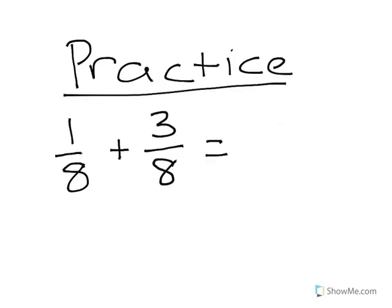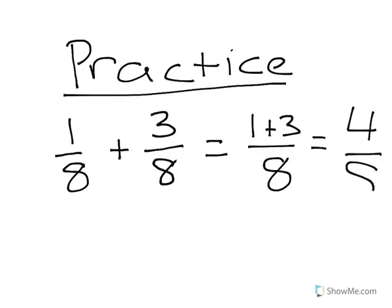Let's do some more practice: one eighth plus three eighths. Go ahead and hit pause and solve that. One eighth plus three eighths — carry our denominator straight over, then one plus three equals four. Our answer is four eighths.